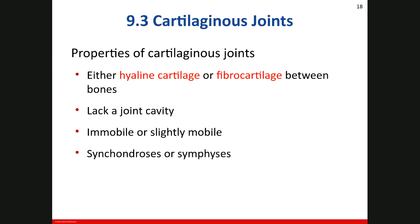The other type of joint is the cartilaginous joint. Cartilaginous joints have cartilage between the articulating bones. Like fibrous joints, they also lack a joint cavity and may be either immobile or slightly mobile. The cartilage found between the articulating bones is either hyaline cartilage or fibrocartilage. The two types of cartilaginous joints are synchondrosis and symphysis.